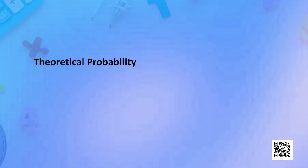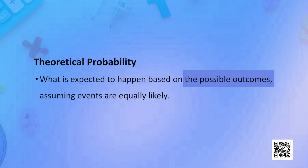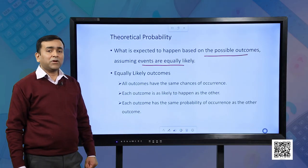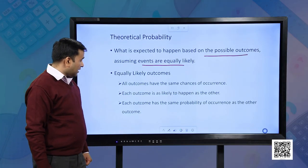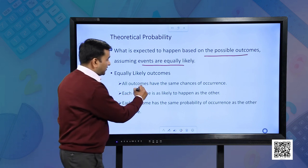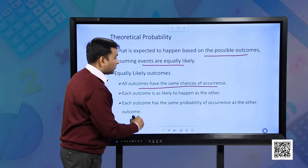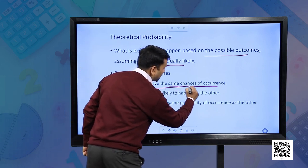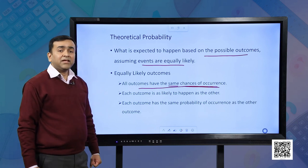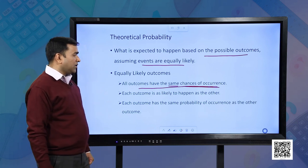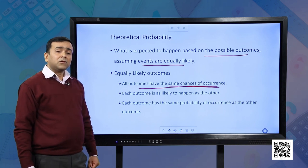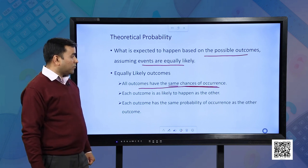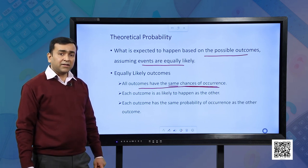Now let us understand what theoretical probability is. Theoretical probability is based on possible outcomes of an event which are equally likely to happen. So, what do we mean by equally likely events? Equally likely events are those events whose outcomes have the same chances of occurrence — each outcome is as likely to happen as the other, and so the probability of each outcome is the same as the probability of another outcome.